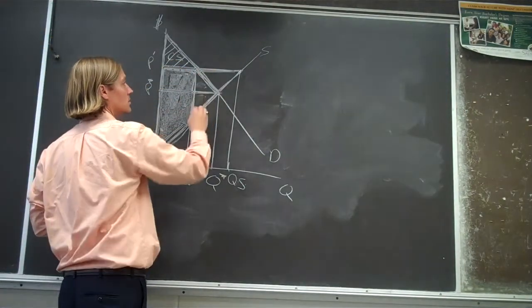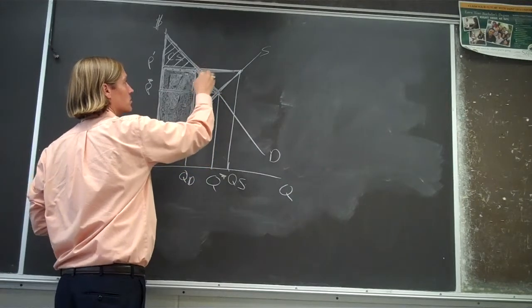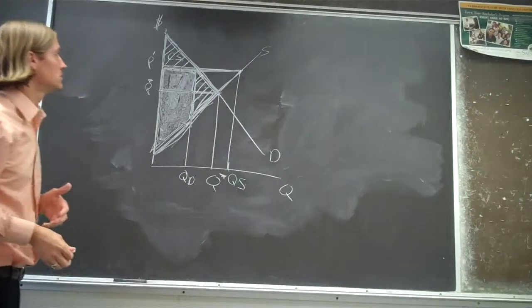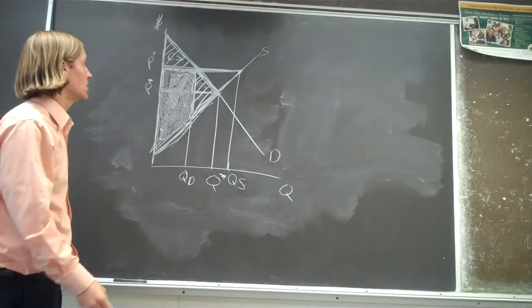But this triangle, this triangle here is gone. That's the deadweight loss or the dead welfare loss. That's the loss that's come about because of the price floor that was put in place.